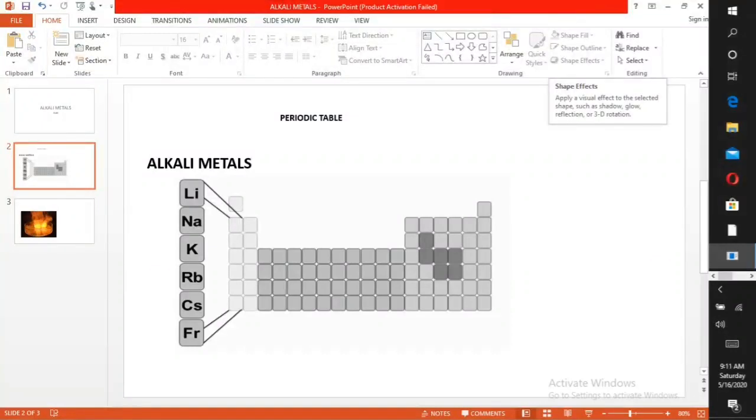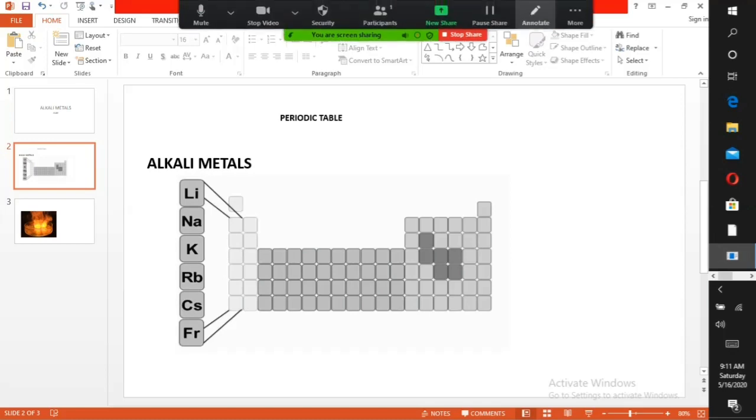Alkali metals are soft silvery metals found in group 1 of the periodic table. They have low melting points and boiling points when compared with other metals in groups 2 and 3. They are solids at room temperature, but at temperatures slightly above room temperature, francium, cesium, and rubidium can exist as liquids.